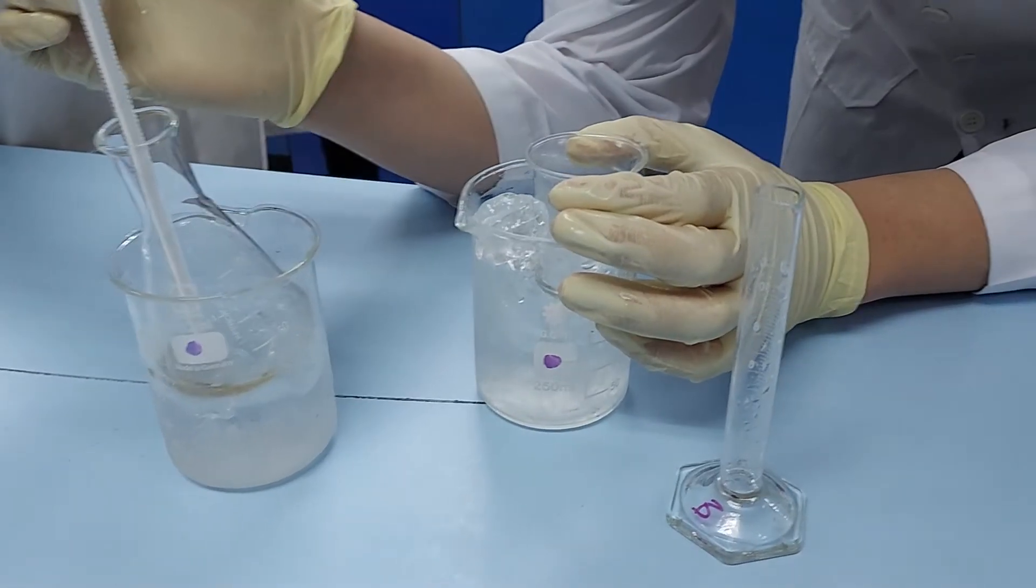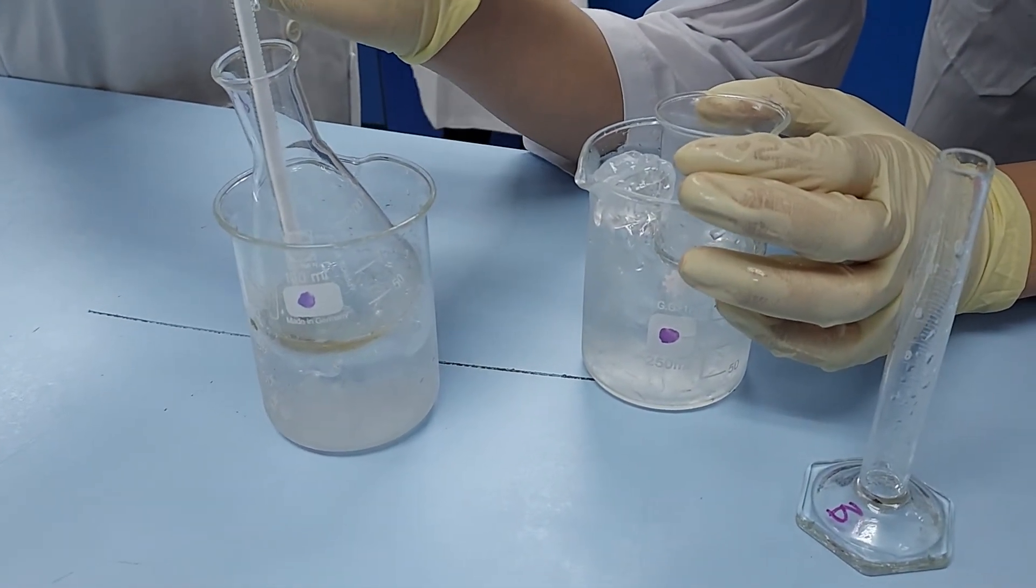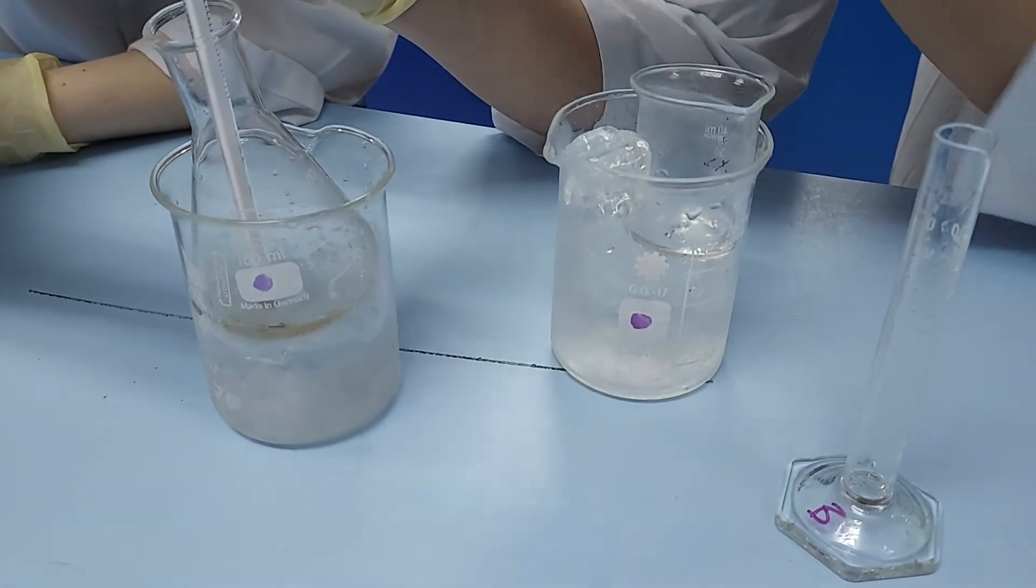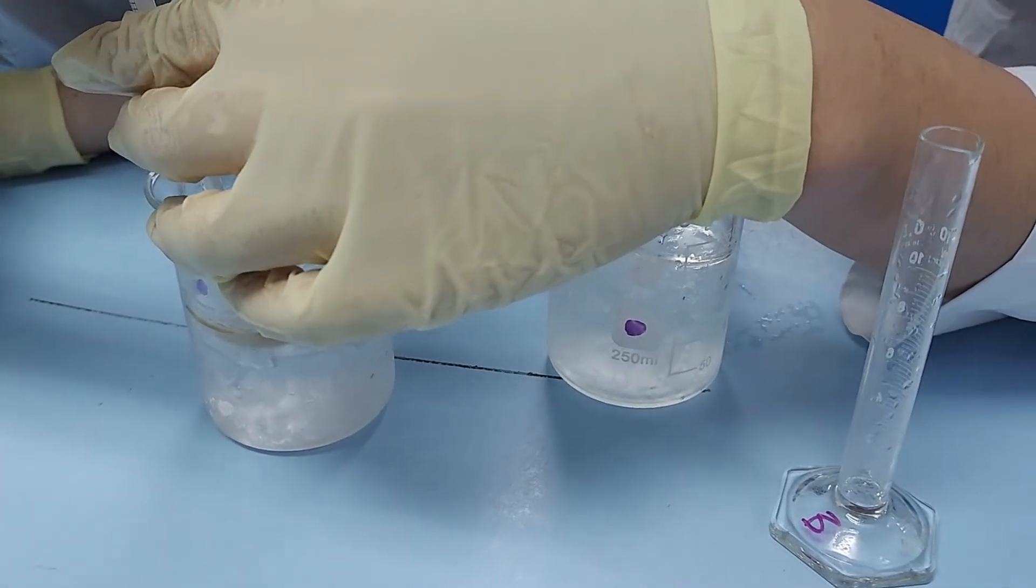It's really important that the nitrating mix is added very slowly, drop by drop, keeping the temperature below 10 degrees. If you add it too fast, you get the wrong product.